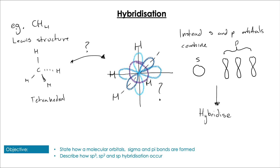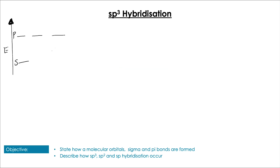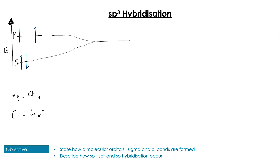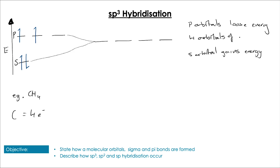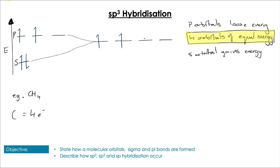Looking at the simplest example first: sp3 hybridization, which occurs in CH4. We have four total electrons across the 2s and 2p orbitals. The three p orbitals and the one s orbital all combine — the p orbitals drop slightly in energy and the s orbital goes up a bit in energy. This allows all four orbitals to have equal energy, so these four electrons are spaced evenly and available to form single bonds with the hydrogens in CH4.